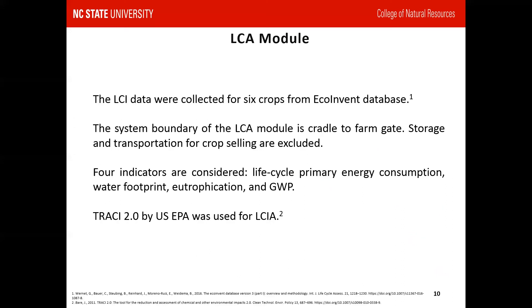In the LCA module, the LCI data of six crops are collected from the ecoinvent database. The system boundary chosen was cradle to gate; storage and transportation for crop selling are excluded. To account for the impact information for farmers, we use primary energy consumption, water footprints, eutrophication, and GWP as indicators. To calculate the GWP and eutrophication, we use TRACI 2.0 by US EPA.